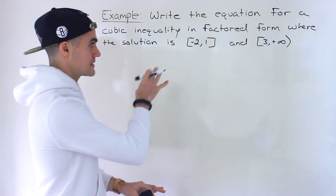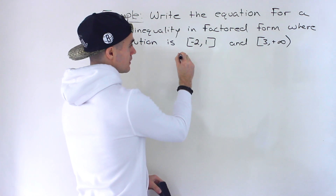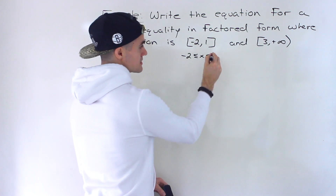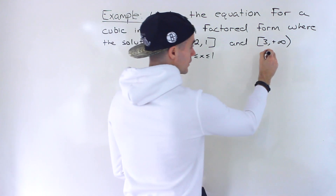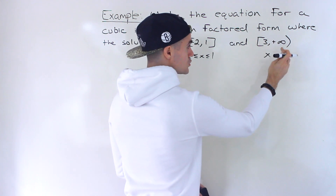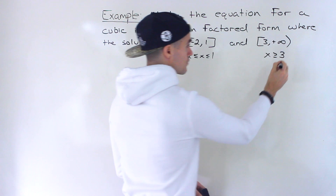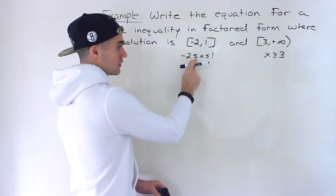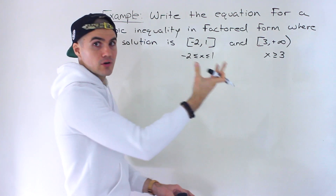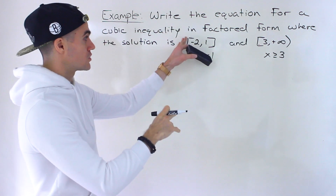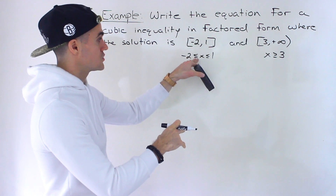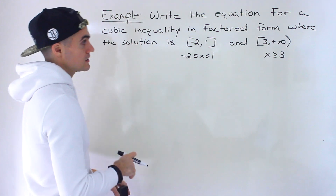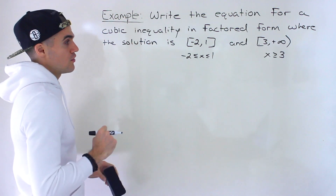Another way this could be written is x being greater than or equal to negative two and less than or equal to positive one, and then from three to infinity, x is greater than or equal to three. Because these are square brackets, that's why we have the greater than or equal to and less than or equal to signs. If they were circle brackets, it would just be greater than or less than — square brackets include those endpoints.